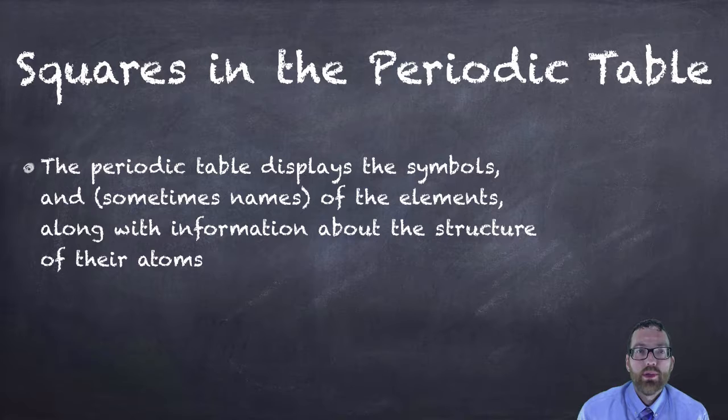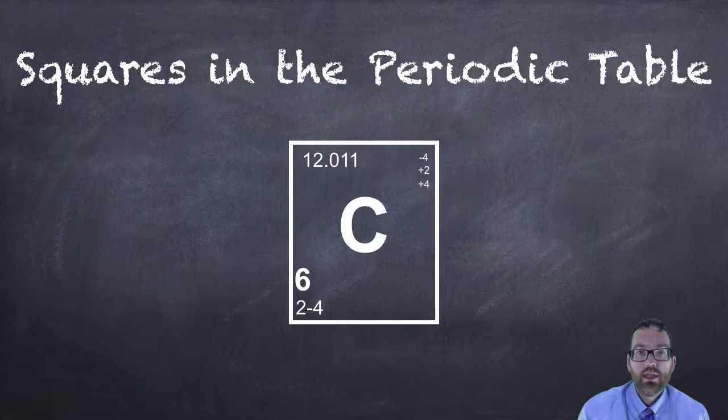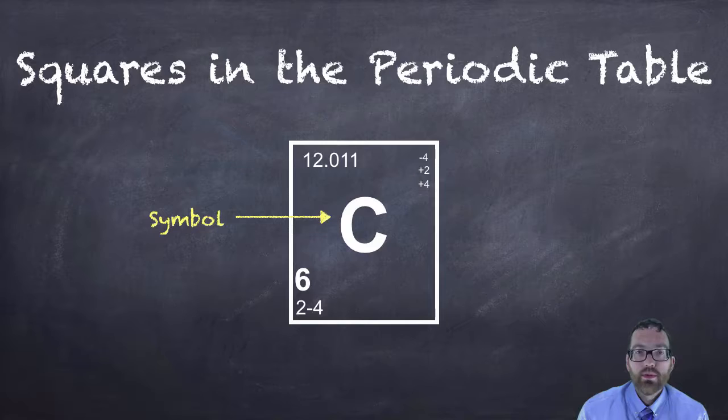If you look at the squares on the periodic table, there's some information that we can get from them. The periodic table displays the symbols and sometimes names of the elements along with other information about the structure of their atoms. So let's look at a typical periodic table square. The first thing we see here in the middle is a symbol. The symbol is either going to be one letter or two. The first letter is always capitalized, the second letter is always lowercase.